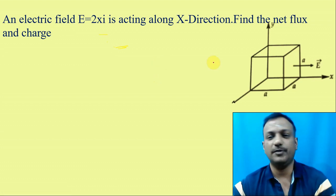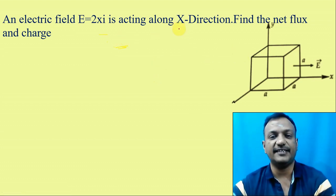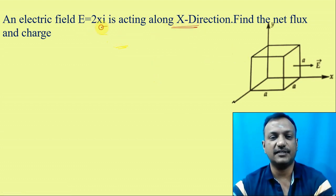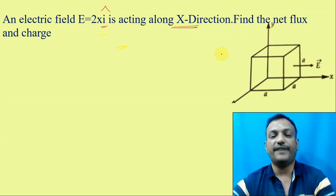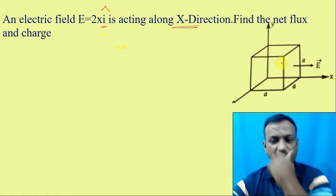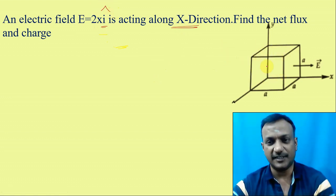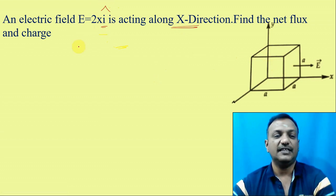Now, we are given that the electric field is acting along the x-direction. We have to find the net flux in the cube. There are many fluxes. Next, how much is the charge?